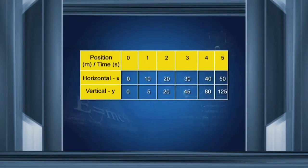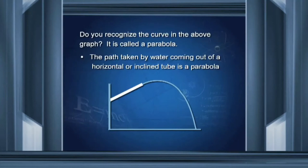Here you see the horizontal axis: the distance is 10, 20, 30 meters after 1, 2, 3, 4, 5 seconds. On the vertical axis, the distance from the top is 0, 5, 20, 45, 80, 125 meters. We plot this along the x and y axes and find that the curve has the shape of a parabola.